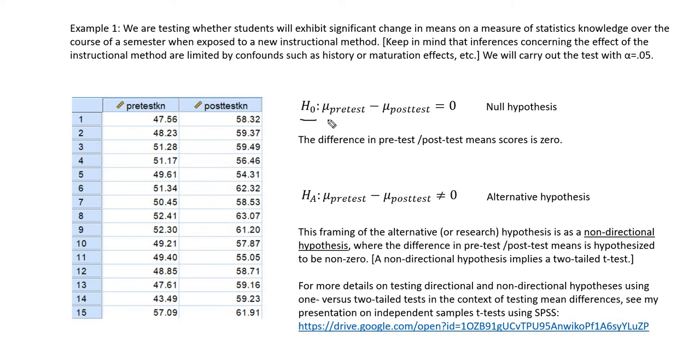Our null hypothesis is stated as μ at pre-test minus μ at post-test equals 0, where μ is referring to a population mean. So the null hypothesis is essentially stating that the population mean at pre-test is equal to the population mean at post-test, and that would be an indication that there was no change over time in terms of statistics knowledge.